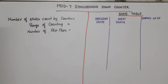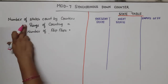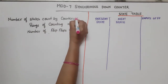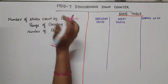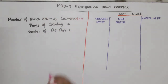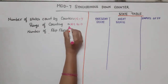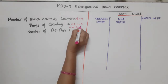First, we need some basic things. How many states can be counted by this counter? The number of states counted by this counter is equal to N, which is the mod value — that is 7. So it can count 7 states. Since this is a down counter, the range is N minus 1 to 0, meaning it will count from 6 down to 0.